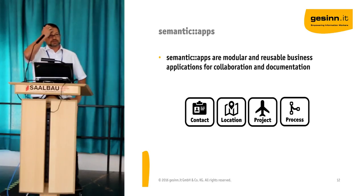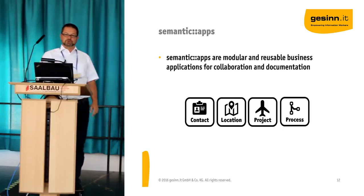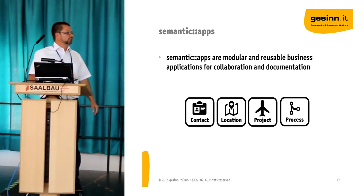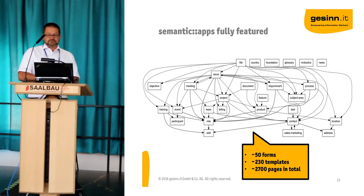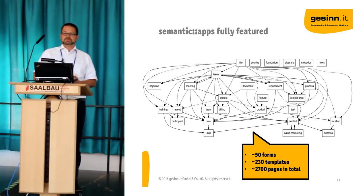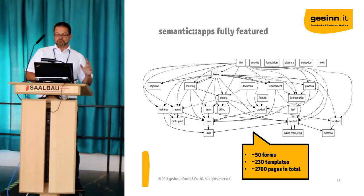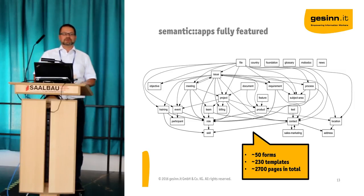If a customer says they have this or that challenge, you can say: you need a balanced scorecard, you need persons, you need this and that. So we really pick from an app store what we would like to deploy and fuel the wiki content. The current semantic apps are fully featured — this graph is automatically created from our model. At the moment there are around 50 forms, 230 templates, and 2,700 pages in total. I will show you a few examples of these semantic apps later. But with 2,700 pages, there is no way to maintain this by hand — you're completely lost.